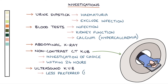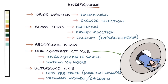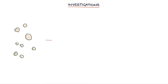A negative ultrasound result does not exclude kidney stones. Ultrasound is less effective at identifying kidney stones but is helpful in pregnant women and children. Stones can be analysed to determine their type, which is useful to help establish the cause and reduce the risk of recurrence.